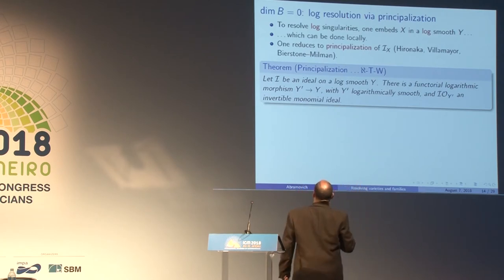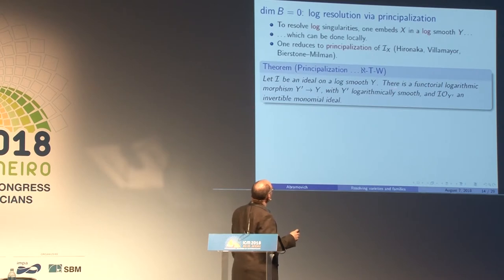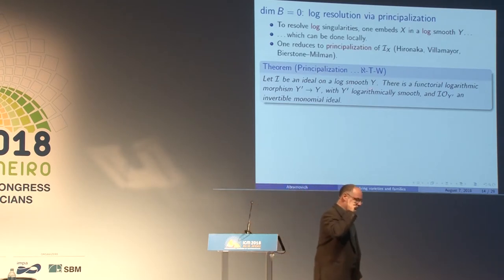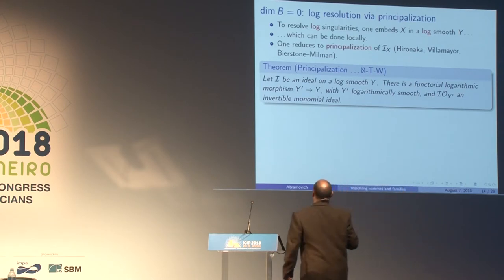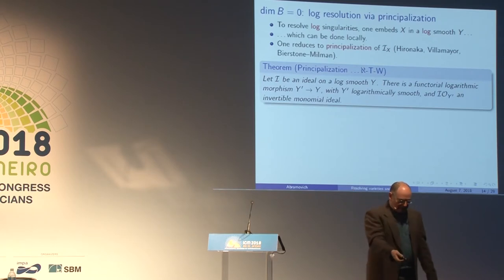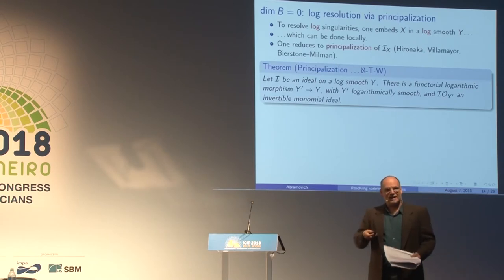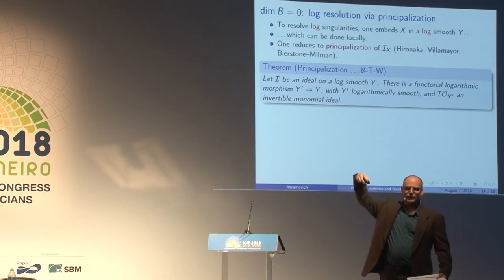This idea is already in Hironaka, though not exactly under this name. It certainly appears in the rewrites by Villamayor and his school and by Bierstone and Milman. What we did is the logarithmic version of principalization. The statement: suppose I have an ideal on a logarithmically smooth variety. There is a functorial logarithmic morphism Y' to Y such that Y' is still logarithmically smooth, but the ideal is now an invertible monomial ideal — it becomes an ideal of components of the boundary.